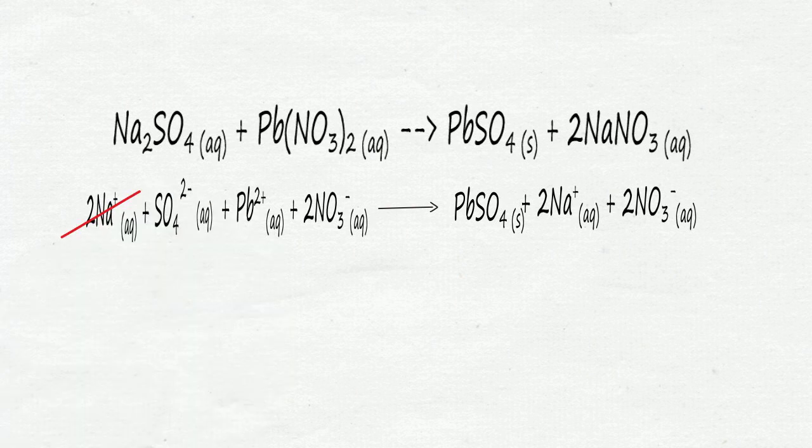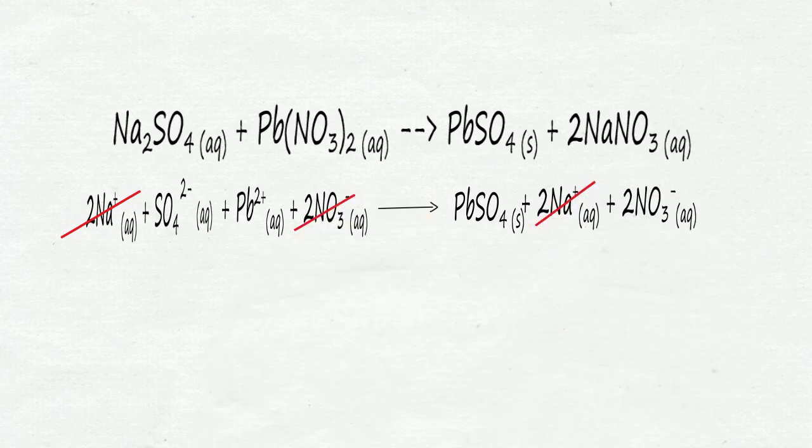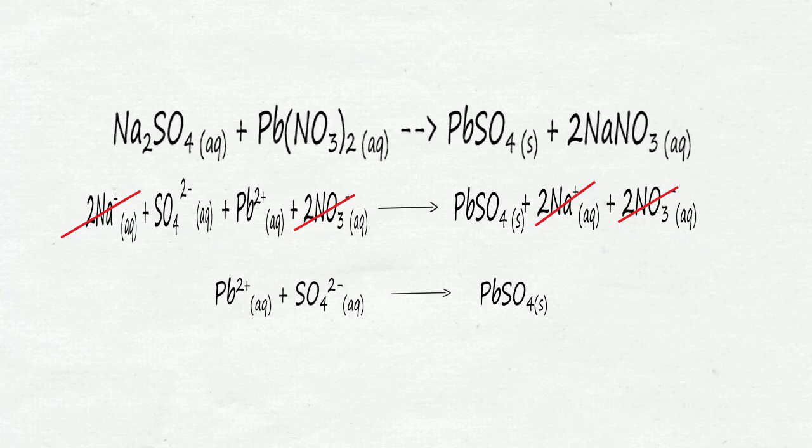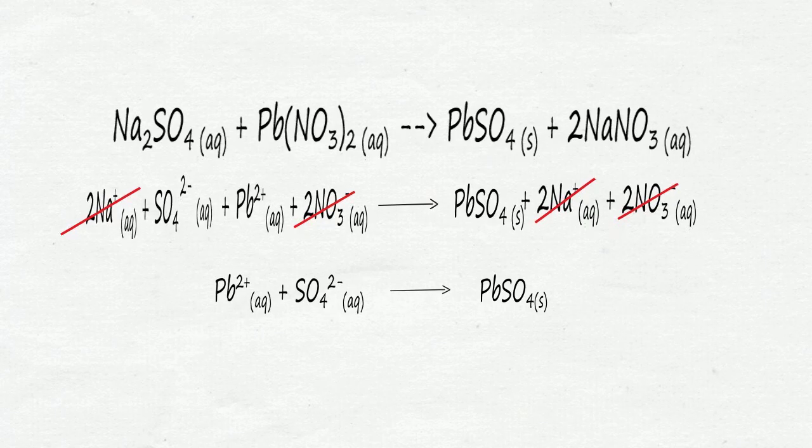We cancel out the ions that are the same on both sides. And we get the net ionic equation. Thank you.